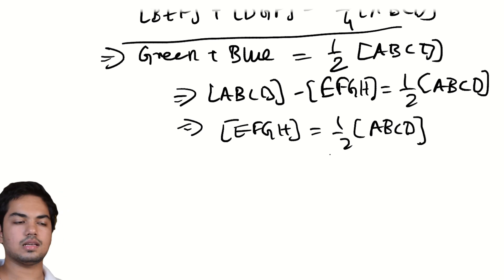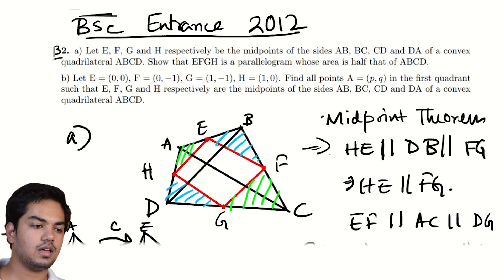We move on to the next part, which says that if you fix the midpoint quadrilateral, in this case, on the coordinate plane where E is at the origin, F is at (0, -1), G is at (1, -1), and H is at (1, 0). So we'll see shortly that this is just a square. Find all points A = (P, Q) in the first quadrant such that EFGH is the midpoint quadrilateral of some convex quadrilateral ABCD.